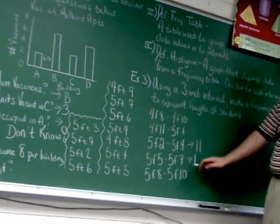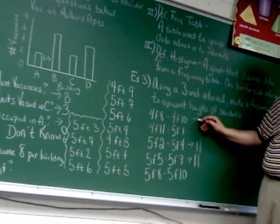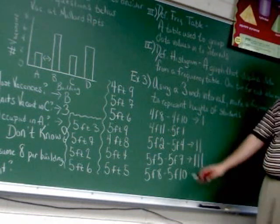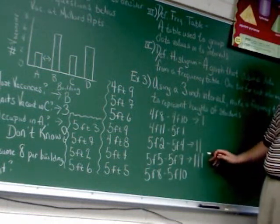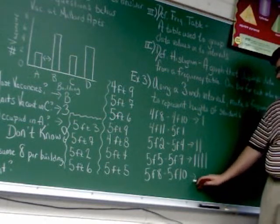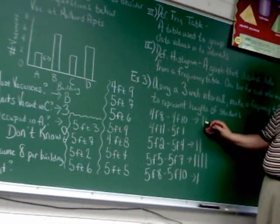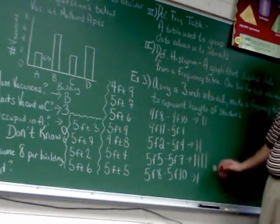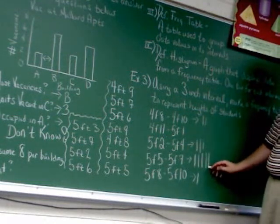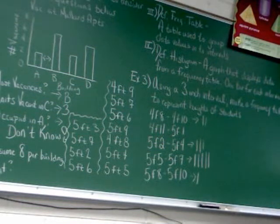Five foot six is in this group. Four foot nine is in this top group. Five foot seven in the five five to five seven. Five foot six, same thing. Five foot nine, bottom group. Four foot eight, top group. Five foot four, five two, five four group. Five foot five, back group. That's how you make the frequency table part.